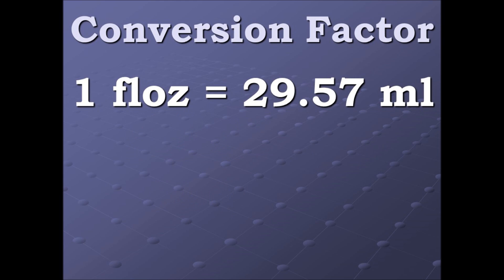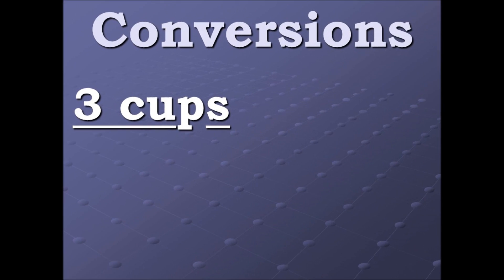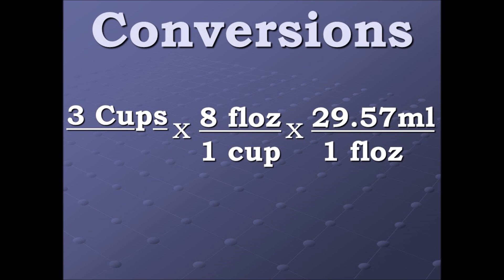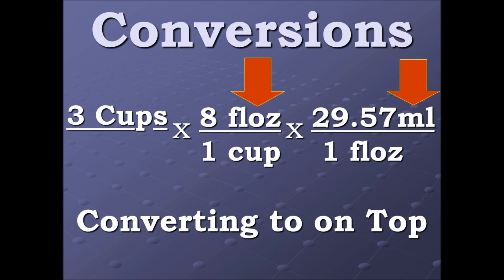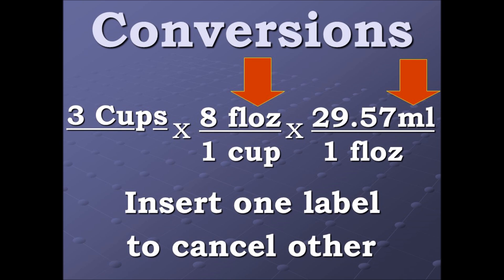Here's our second conversion factor: since both terms are equal, we can put them into a ratio, and 29.57 milliliters divided by one fluid ounce equals one as well. So to begin, we have three cups times eight fluid ounces over one cup, times 29.57 milliliters over one fluid ounce. Everything we're converting to is on top, and we're inserting one label in an effort to cancel out another label.